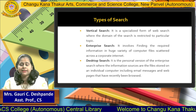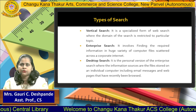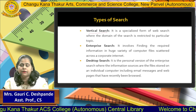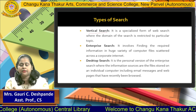Search is nothing but finding out some information from different resources. There are some types of searches. The first one is vertical search. Vertical search means if you want to find out some restricted keyword or some specific phrases, then we can use vertical search.